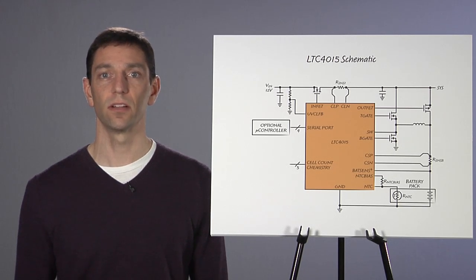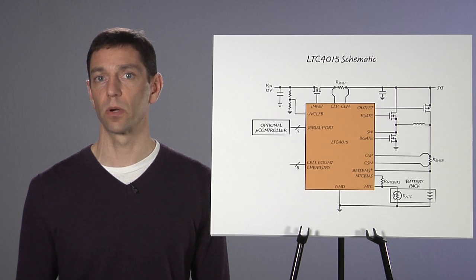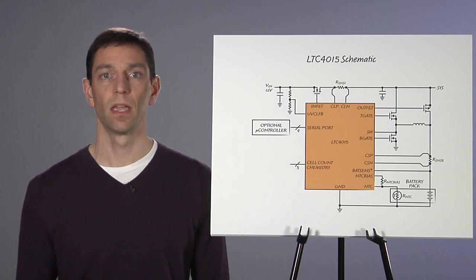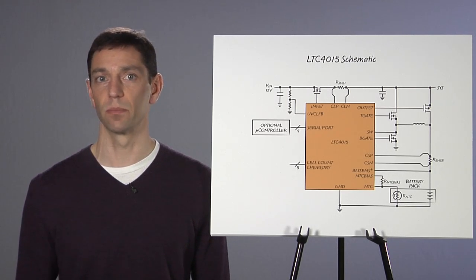Furthermore, the LTC4015 includes a full maximum power point tracking, or MPPT, algorithm that optimizes performance when charging a battery from a solar panel or other power-constrained source. The LTC4015 is well suited for charge currents that range from one amp up to at least 12 amps.